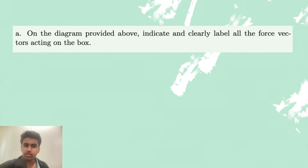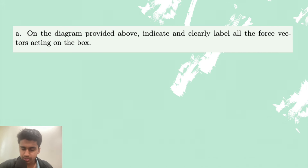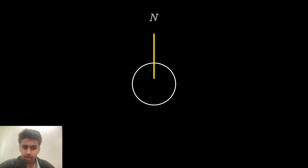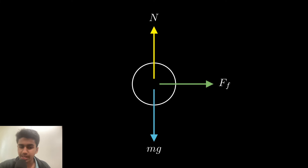Part A of the problem: on the diagram provided, indicate and clearly label all the force vectors acting on the box. There will be three forces: a normal force, gravitational force, and friction force. Normal force points upwards, gravitational force points downwards, and friction force points to the right.